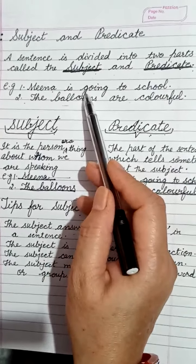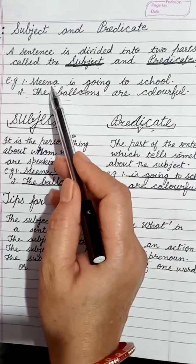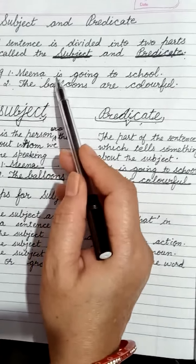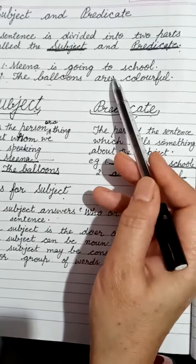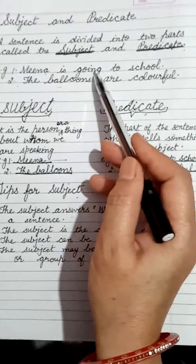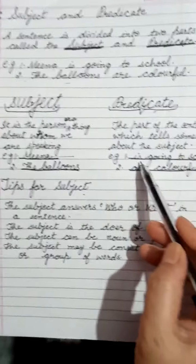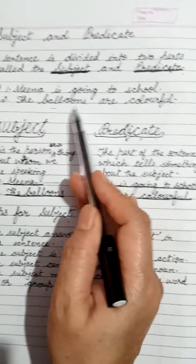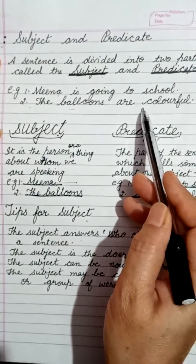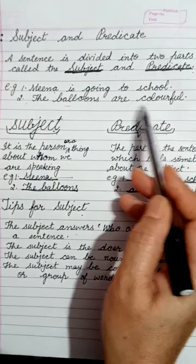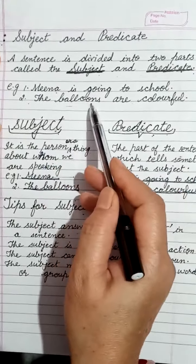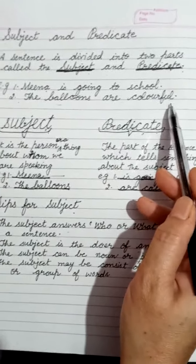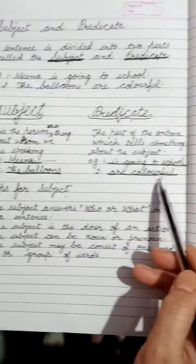Who is going to school? The answer is Mina, so that is the subject. And what action does Mina do? She is going to school — that part is the predicate. In the second sentence, what are colorful? The balloons — that is the subject. And 'are colorful' is the predicate.